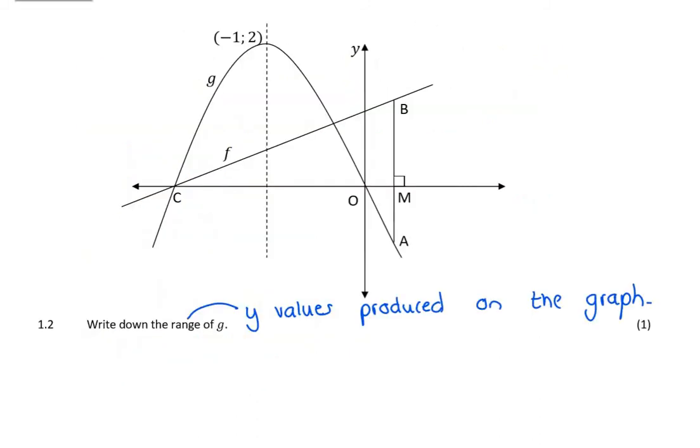On to question 1.2. This question says write down the range of y. So the note to take down here is that the range of any graph is the y values produced by the graph. So in a parabola it's quite nice, because if we look at a parabola, a parabola's y values come all the way up from negative infinity, all the way up, and in this case they peak at 2, it's its maximum, and then they go down again. So I immediately know that my y values in this graph are less than or equal to 2.